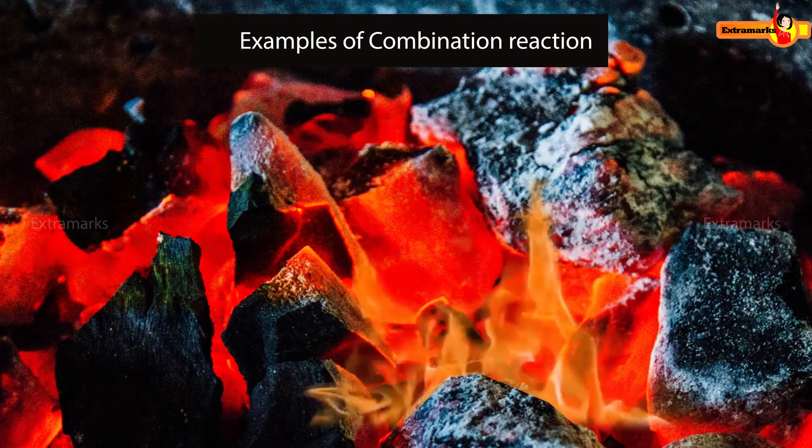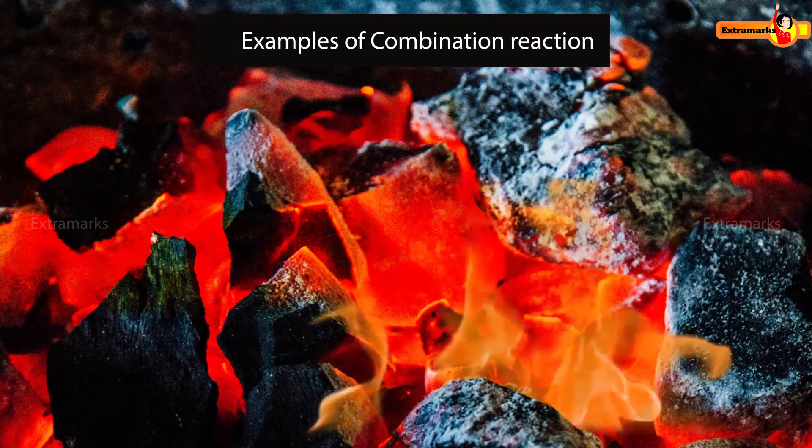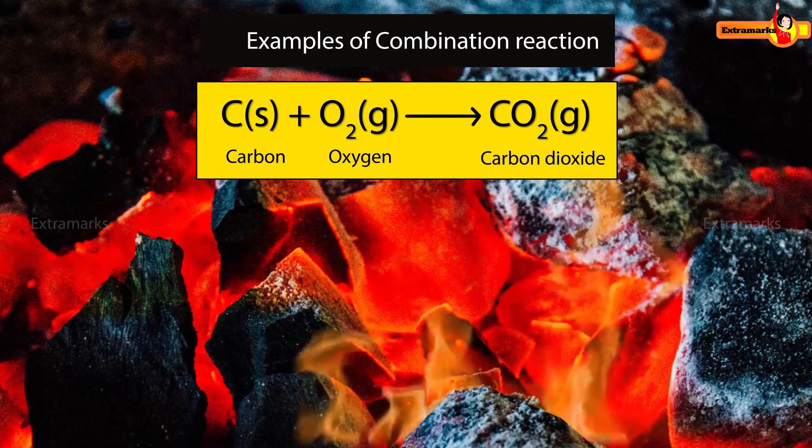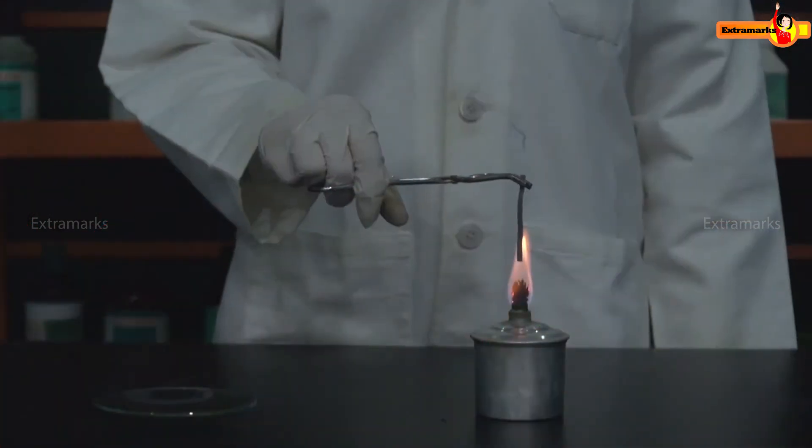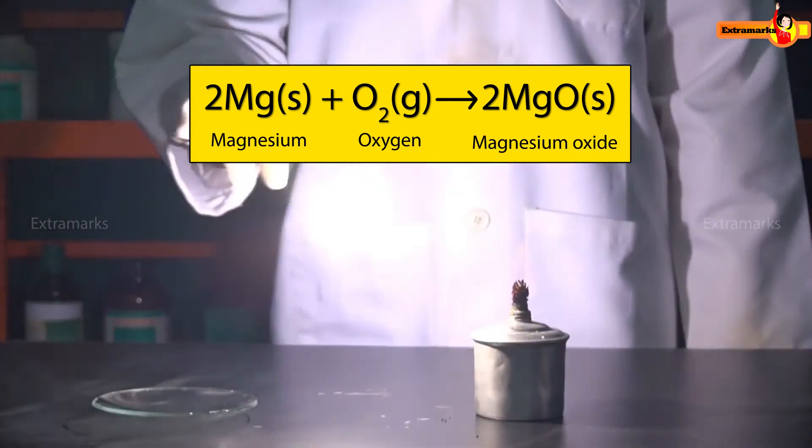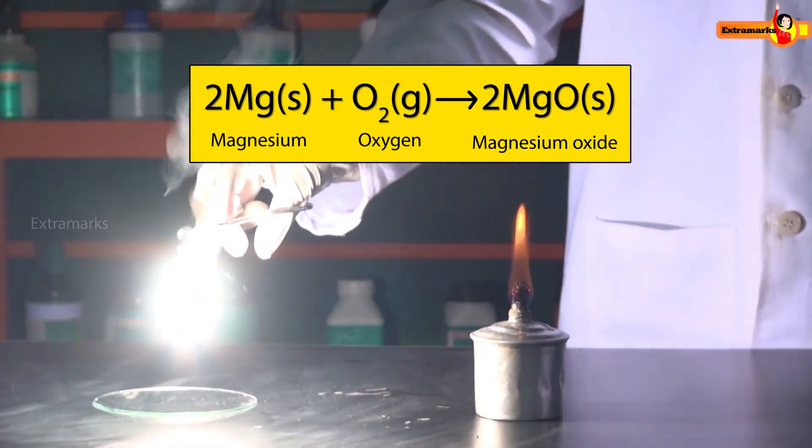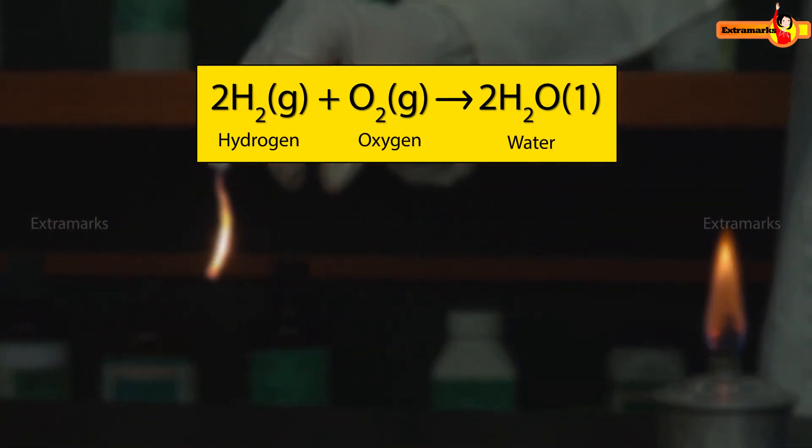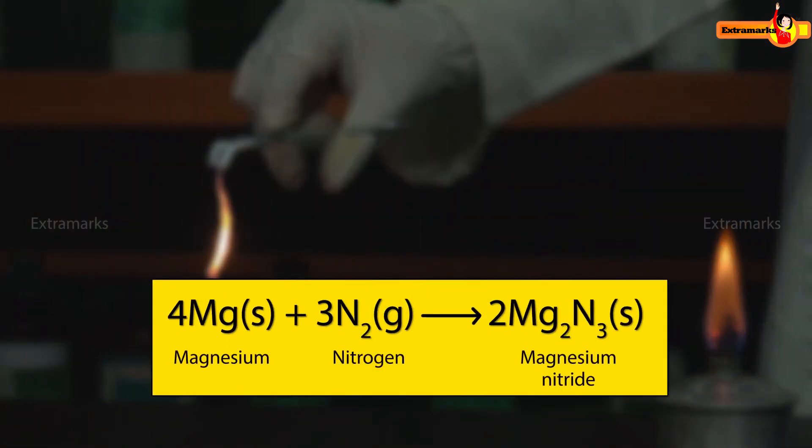Let us see some more examples of combination reaction. During burning, carbon reacts with oxygen to form carbon dioxide. When magnesium is burnt in air, it combines with oxygen present in air to form magnesium oxide. Formation of water from hydrogen and oxygen. Magnesium nitride is produced from the reaction of magnesium and nitrogen.